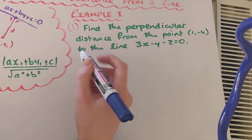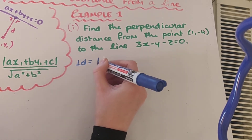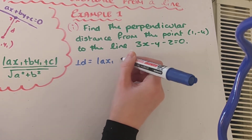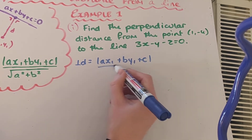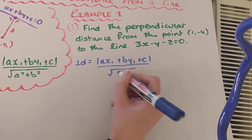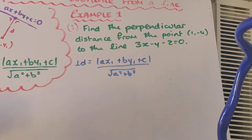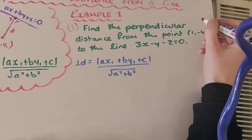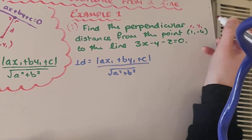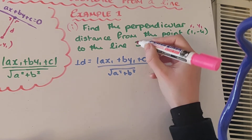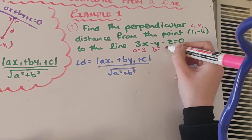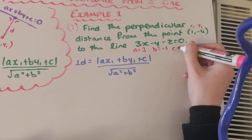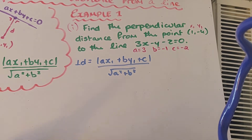As soon as I see those words 'perpendicular distance', the first thing I'm writing out is my formula: ax1 plus by1 plus c all over the square root of a squared plus b squared. Now I need to figure out what to substitute in. So (1, -4) is going to be my x1, y1 in my formula. a is going to be the coefficient of x, so a equals 3. b is the coefficient of y, so b equals minus 1. And c is the constant, so c equals minus 2.